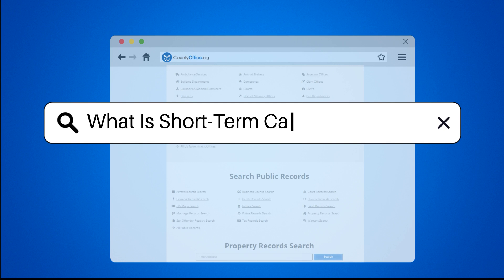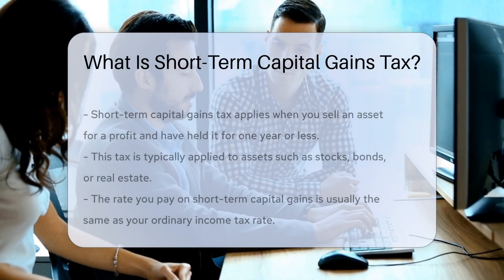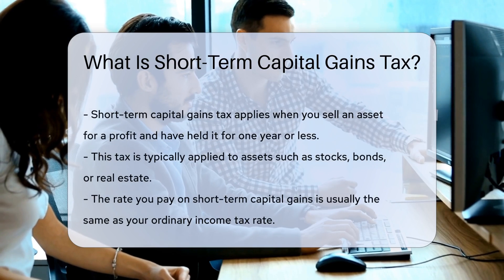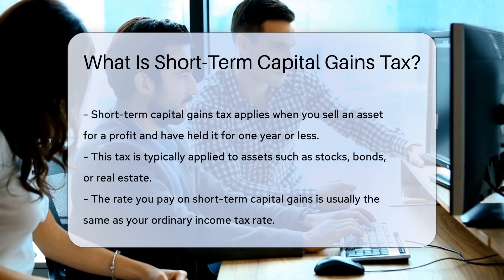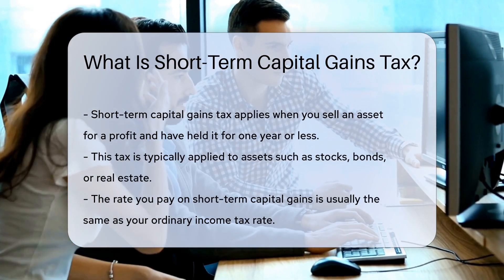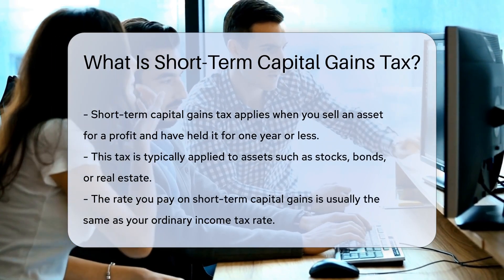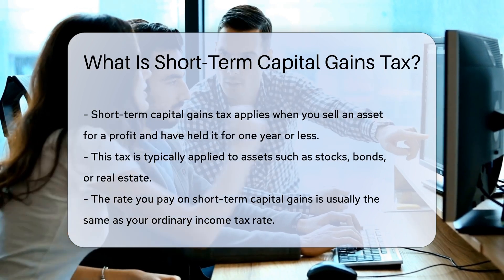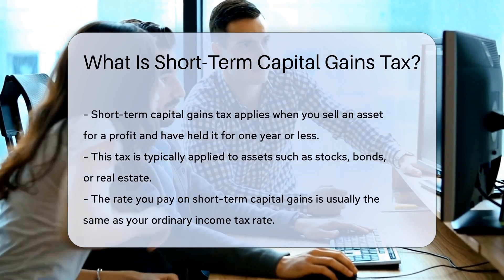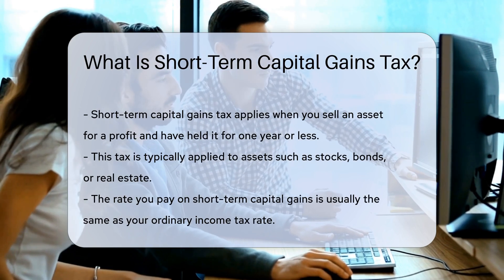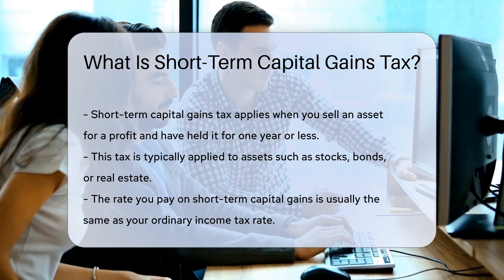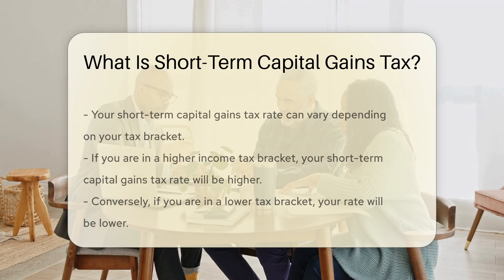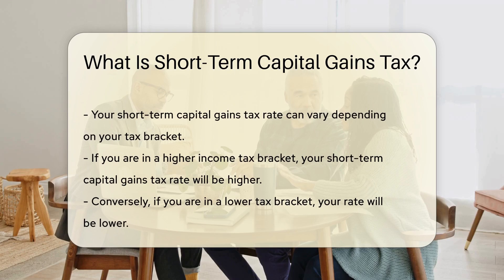What is short-term capital gains tax? When you sell an asset for a profit and have held it for one year or less, you may be subject to short-term capital gains tax. This tax is typically applied to assets such as stocks, bonds, or real estate. The rate you pay on short-term capital gains is usually the same as your ordinary income tax rate, meaning it can vary depending on your tax bracket.